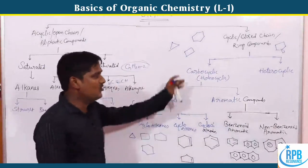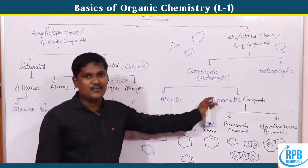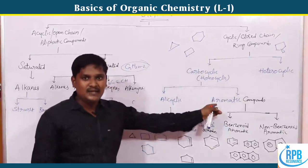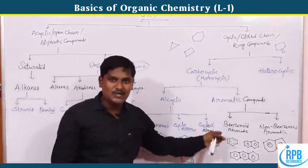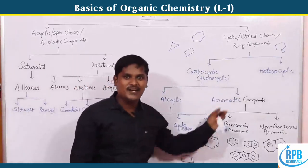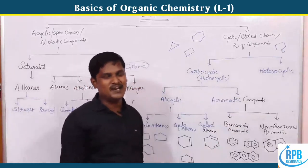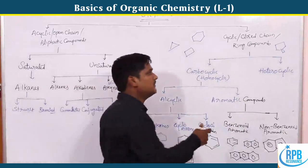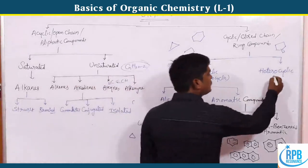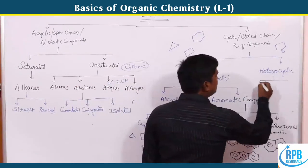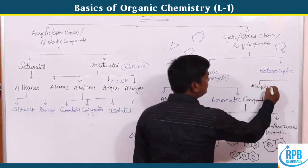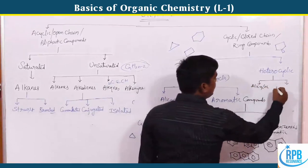So cyclic carbocyclic compounds include alicyclic and aromatic types. Aromatic is of two types: benzenoid and non-benzenoid. The same classification — alicyclic and aromatic — also applies to heterocyclic compounds.